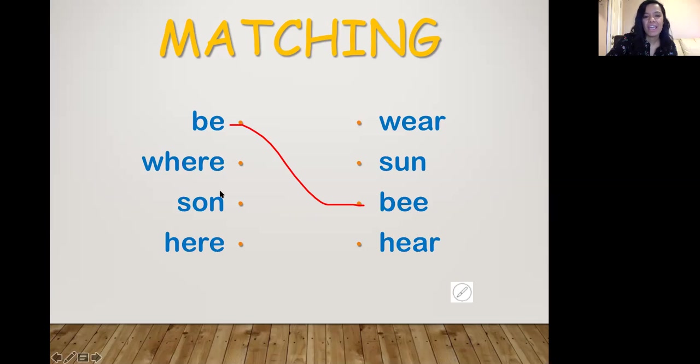Here we have wear. Where are you going? And we're going to match it to the where here. Wear. I wear clothes. I wear a dress. And then here we have sun. There it is. Give me one second. This is frozen as usual. I lost my mouse. Here we go.